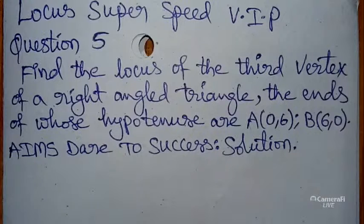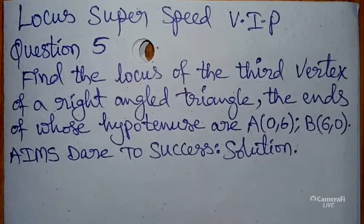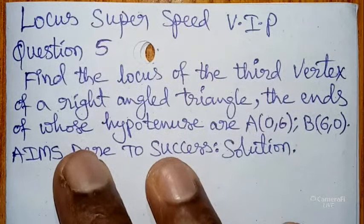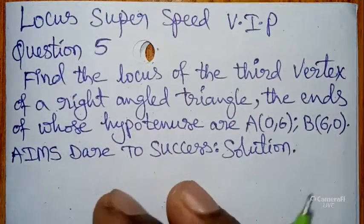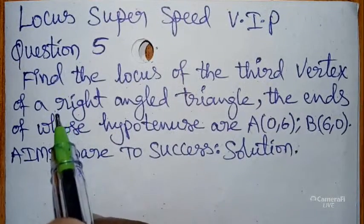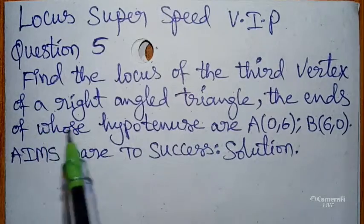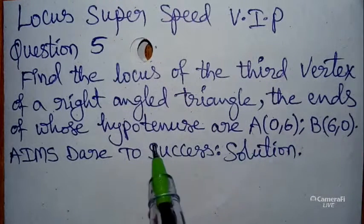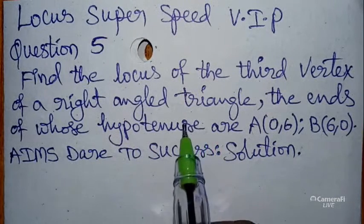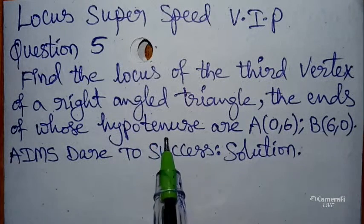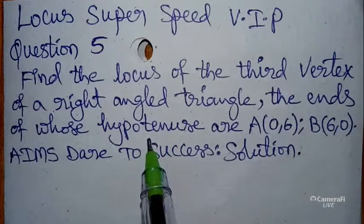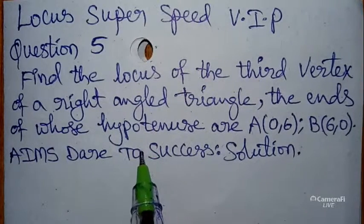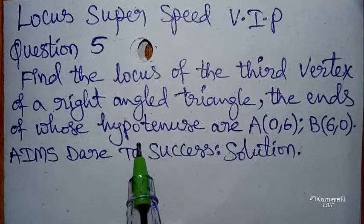Hi, hello, namaste my dear friends and students. Today I came with a new trick and new video. I wanted to discuss with you locus super speed VIP question, fifth part. I have already uploaded super speed VIP questions for four parts from the locus chapter. Today our question is: find the locus of the third vertex of a right angle triangle. I will explain this question with my neat and clear, step-by-step explanation — especially made for you, my dear students.